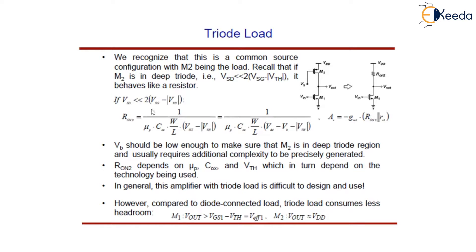So it will behave like a resistor and for this case, the Ron2 will become 1/(μP·Cox·W/L·(VSD - |VTH|)).